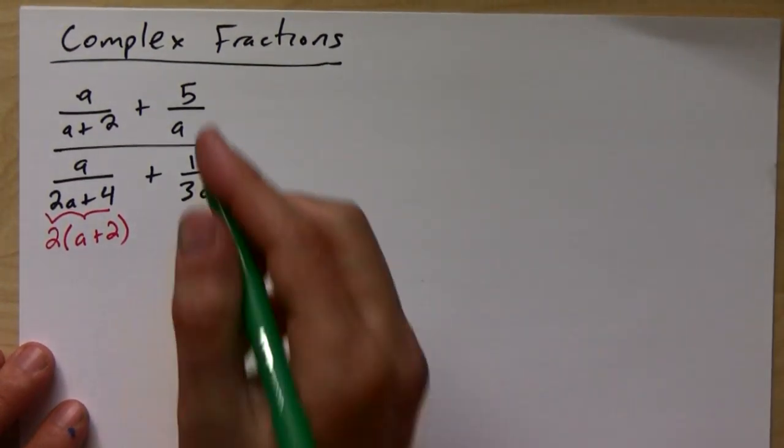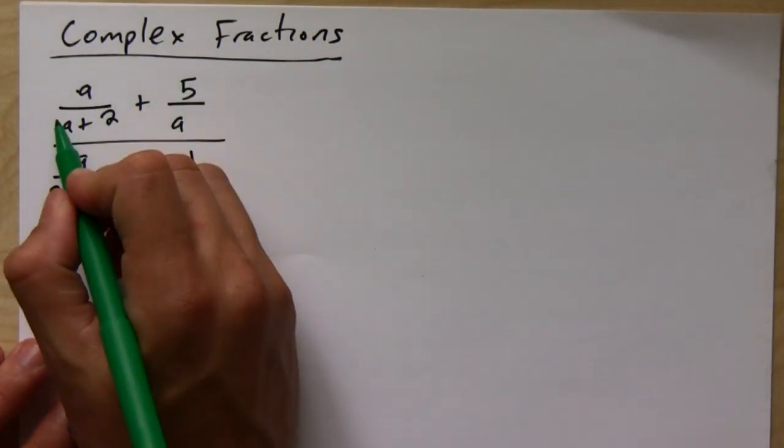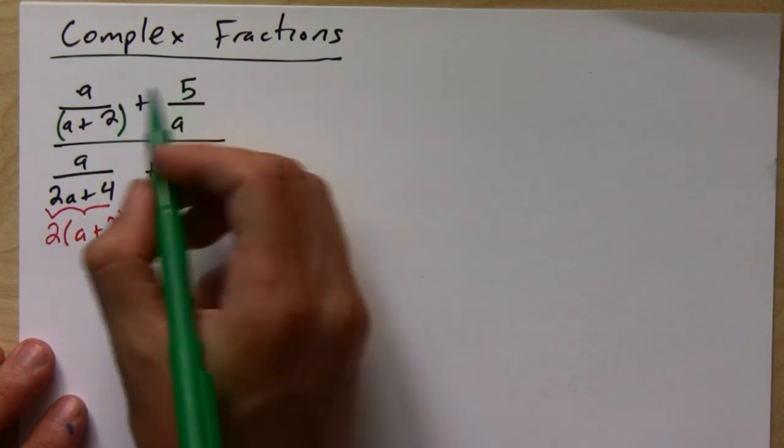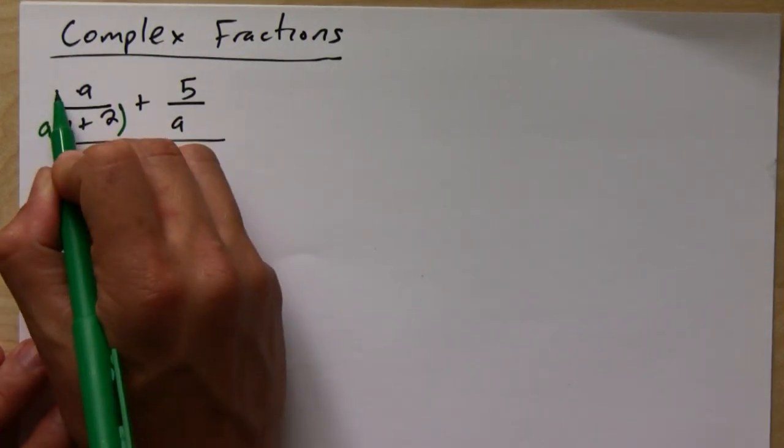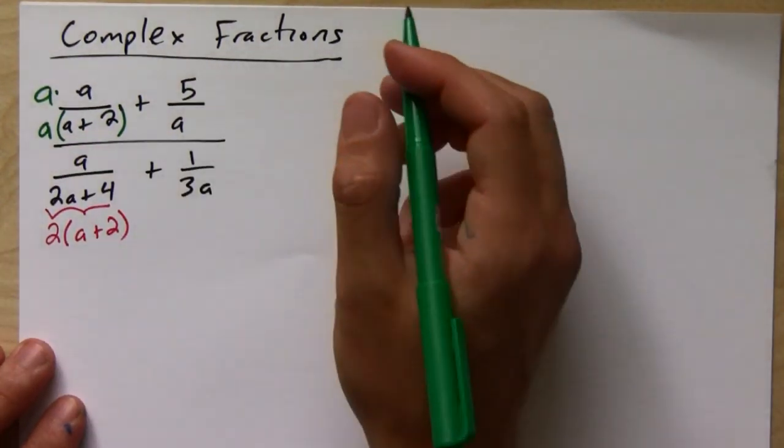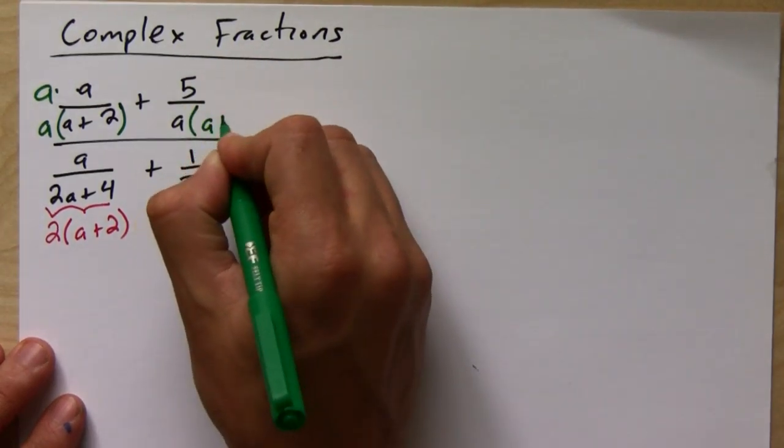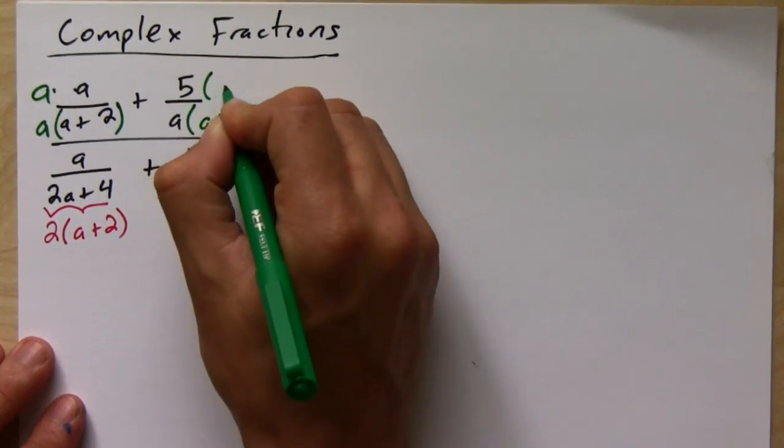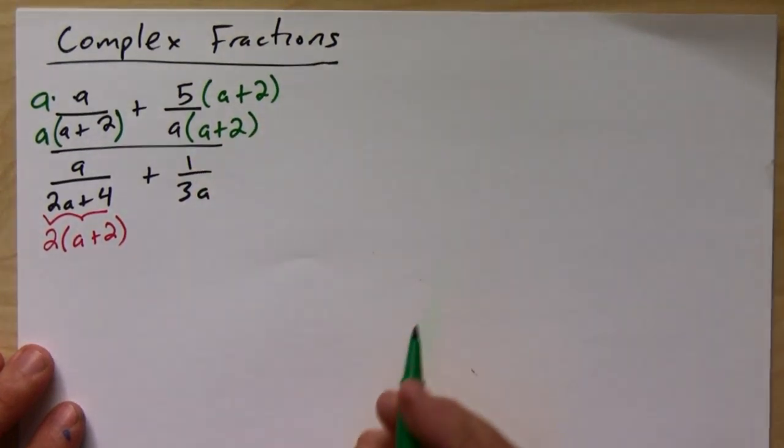So although this has an (a plus 2), it's missing an a, so I'm going to multiply top and bottom by a. This guy's missing an (a plus 2), so I'll multiply top and bottom by (a plus 2).